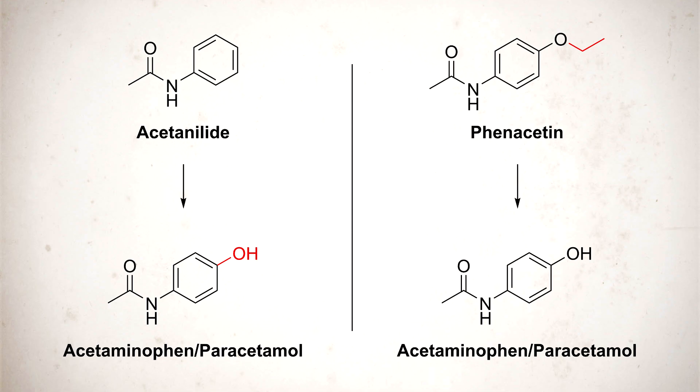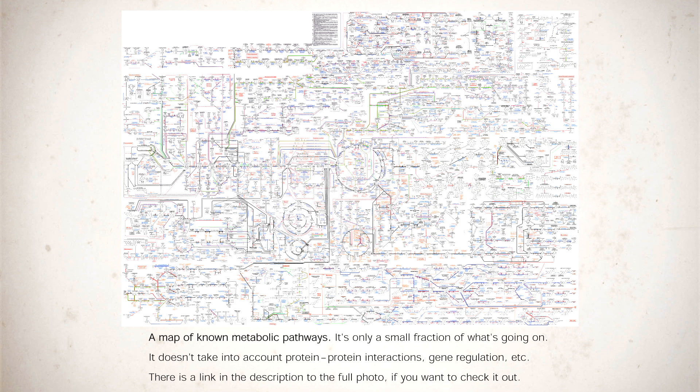Anyway, what I find interesting about all of these pain relievers is how very small structural differences can greatly change the side effects of a drug. By just adding a hydroxyl to acetanilide and removing an ethyl from phenacetin, we go from drugs with potentially fatal side effects to a relatively safe one. In my opinion, this kind of highlighted how difficult drug design and development can be.